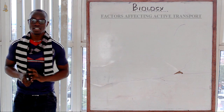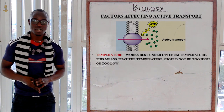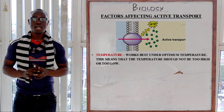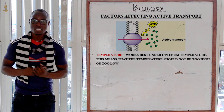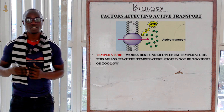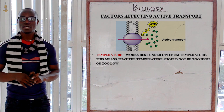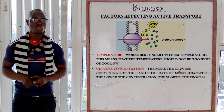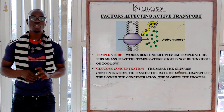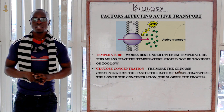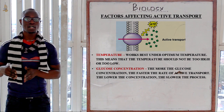Let's look at the factors affecting active transport. The first one is temperature — active transport works best at optimum temperature; it must not be too high or too low. Next, let's look at glucose concentration: the more the glucose concentration, the faster active transport is going to work.